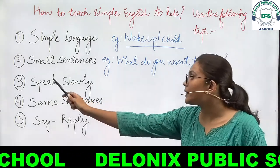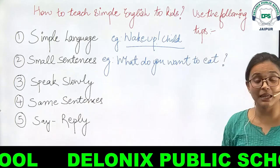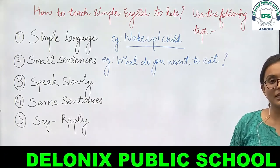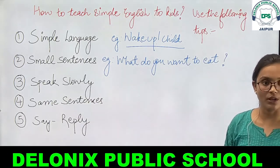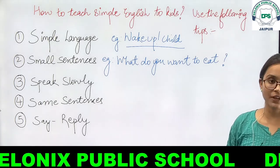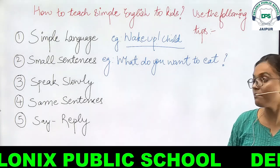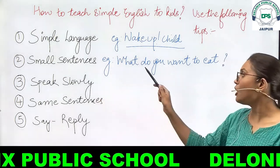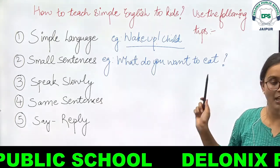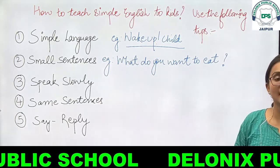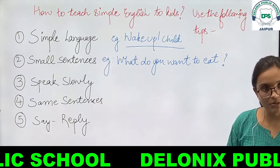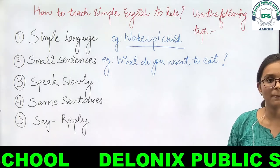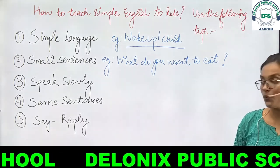Third tip is speak slowly — dheere baat karna. Bacchon ke liye jaldi-jaldi, tez-tez bolne se unko samajhne mein difficulty ho sakti hai. Isliye hamesha dheere bolein. For example, 'what do you want to eat?' — jisse ki baccha ek-ek word ka achhe se meaning samjhega aur usko aapko respond karne mein bhi bahut aasaani hogi.